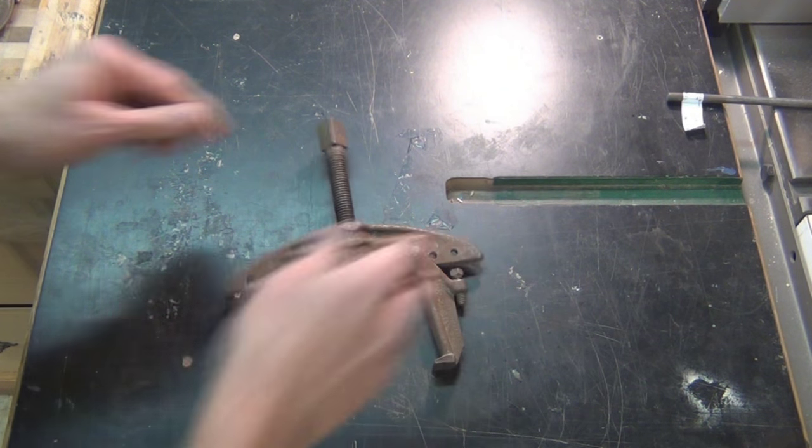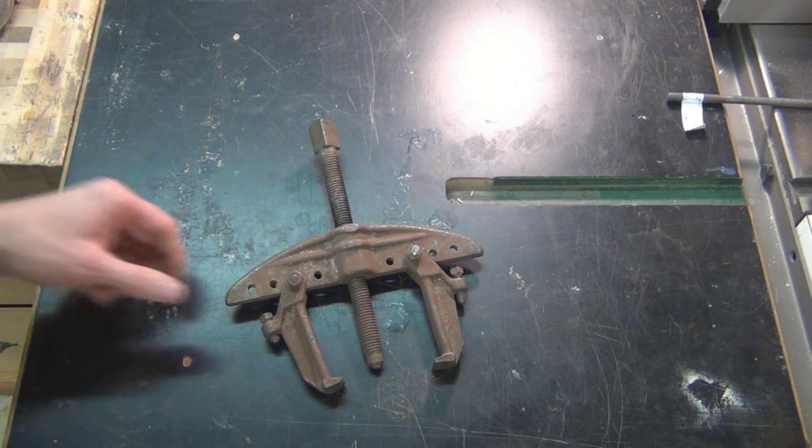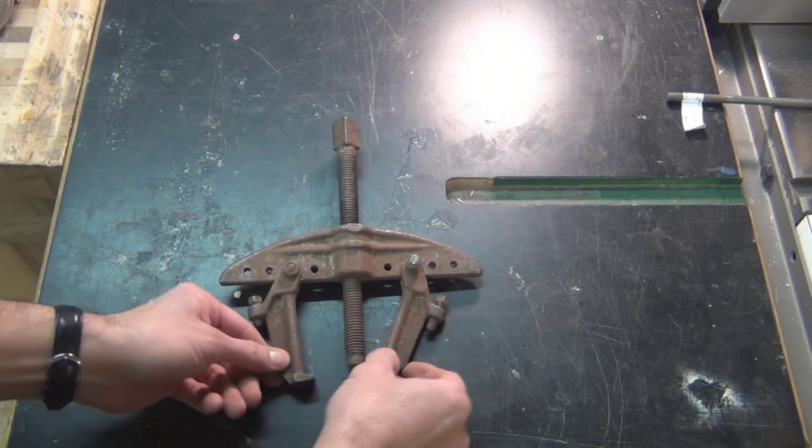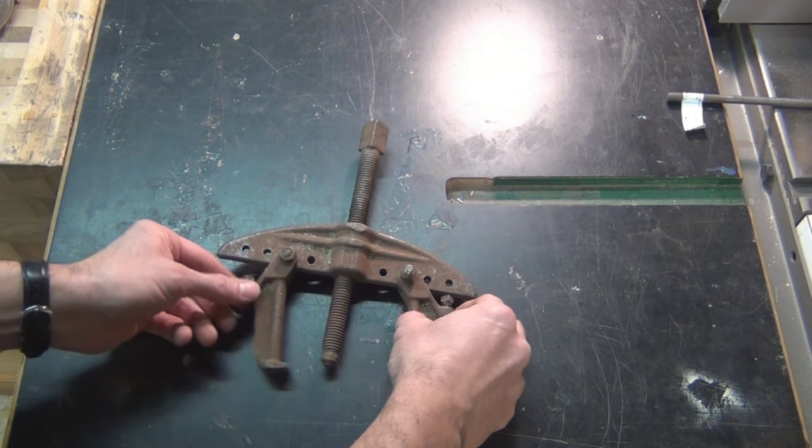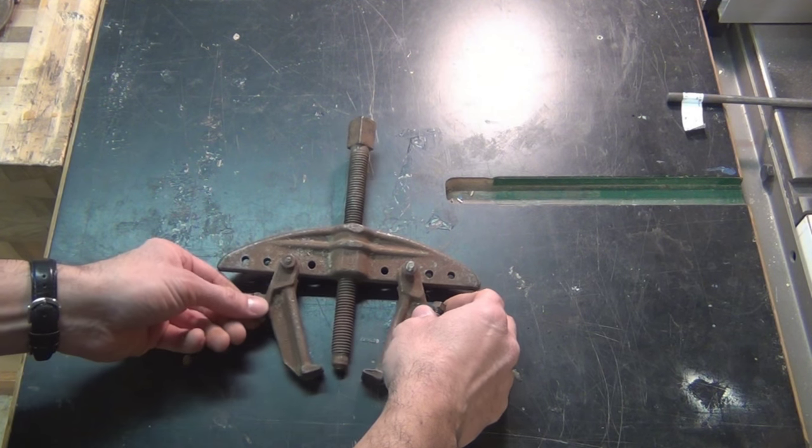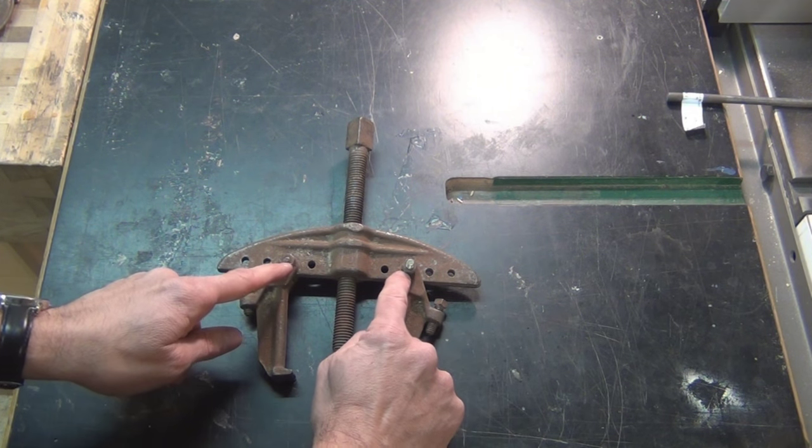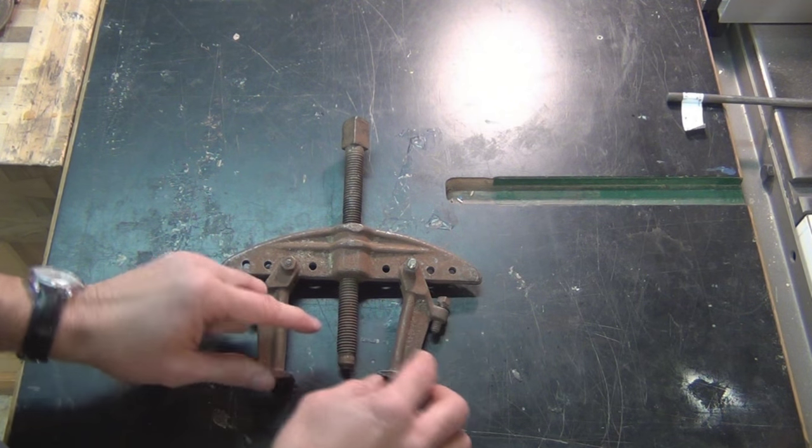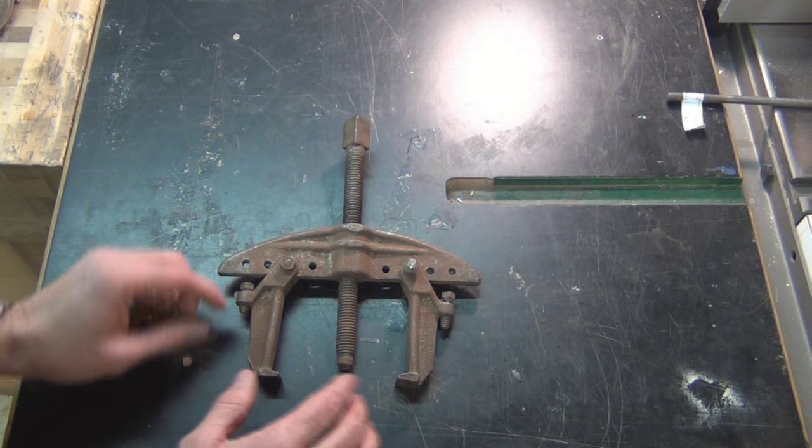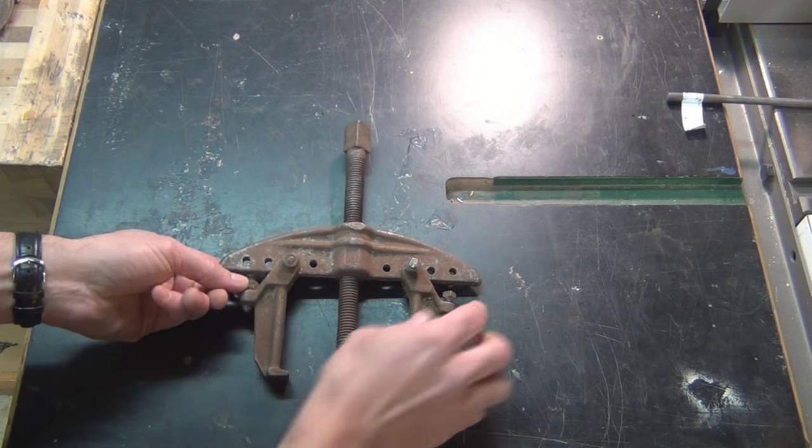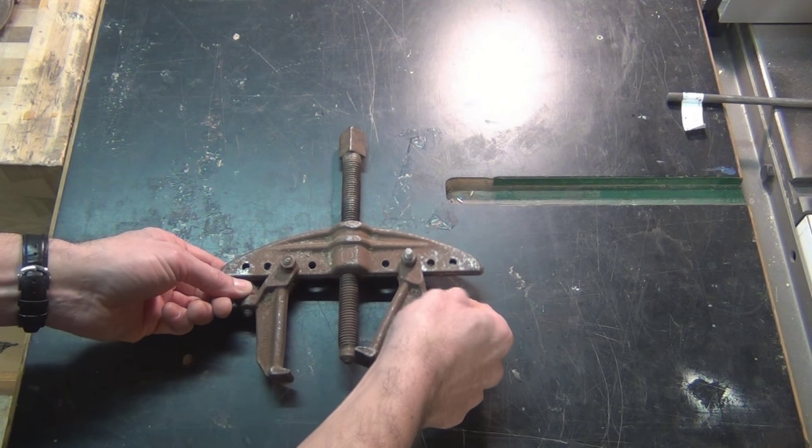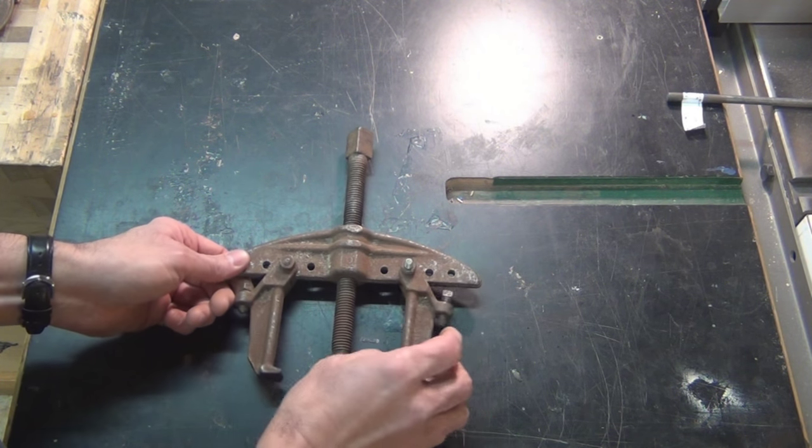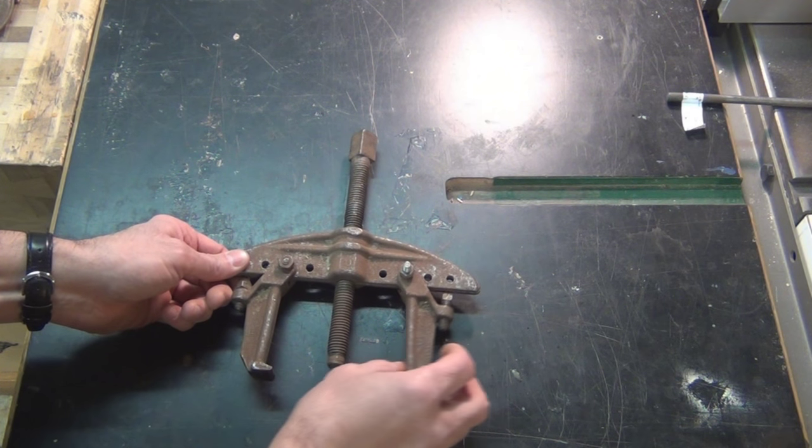Okay guys, what is it? It has these things here that can grab onto something and you can adjust them according to these holes so you can position how far apart they're going to be. There's these set screws here that you can use to determine how far back that's going to be allowed to go.